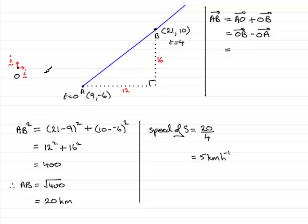So, using vectors, what is O to B? Well, O to B as a vector was 21I plus 10J. And to save space, I'm going to write it as a column vector, 21, 10. And then we're minusing the vector O to A. So that is 9I minus 6J. So, 9 minus 6. 21 minus 9 is going to be 12. And 10 minus minus 6 is 16. So, we've got the vector AB as 12, 16.